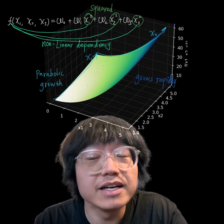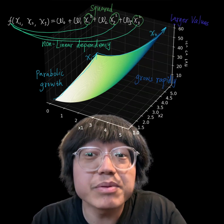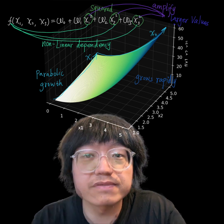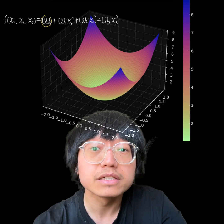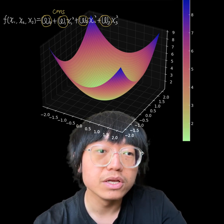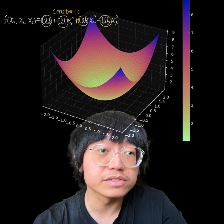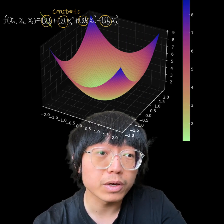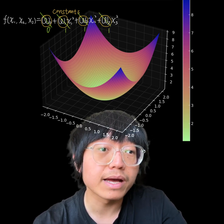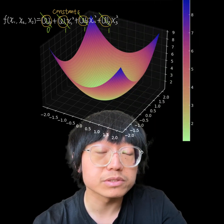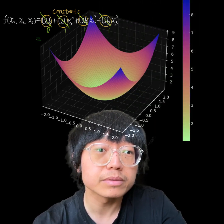Let's set specific values for the constants ω and simplify by setting x₃ equal to 1, so that we can visualize it in three-dimensional space. Specifically, ω₀ is 0 for simplicity, ω₁ is 1, ω₂ is 1, and ω₃ is 1. This simplifies the function into f(x₁, x₂, x₃) = x₁² + x₂² + 1.